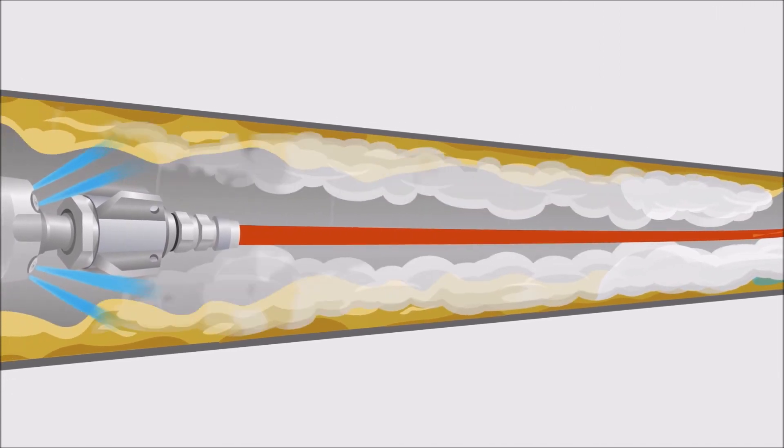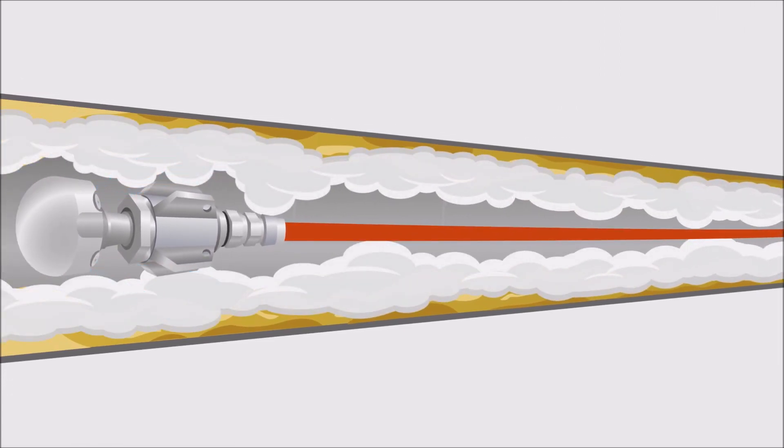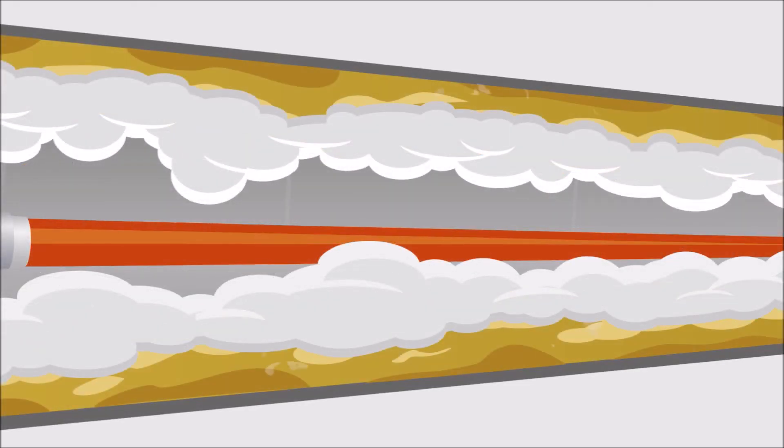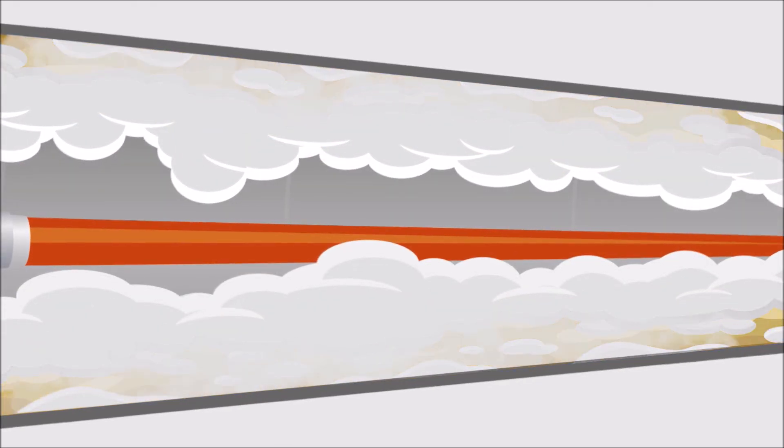Grease-X Jet will penetrate the grease stuck to the pipe walls, softening and breaking it up with a powerful biodegradable water-based emulsifier.